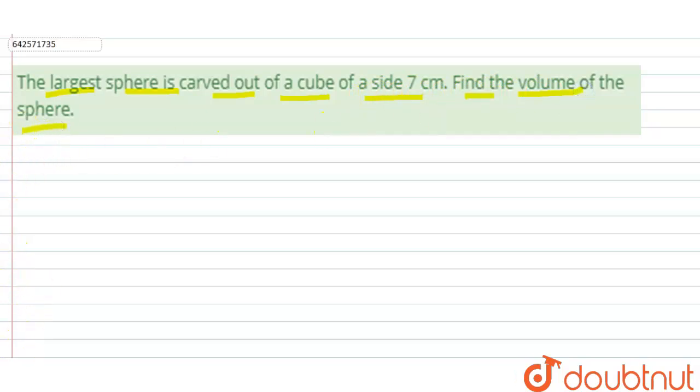The condition is like this, I am showing you. This is the largest sphere that can be carved out of a cube of side 7 centimeter.